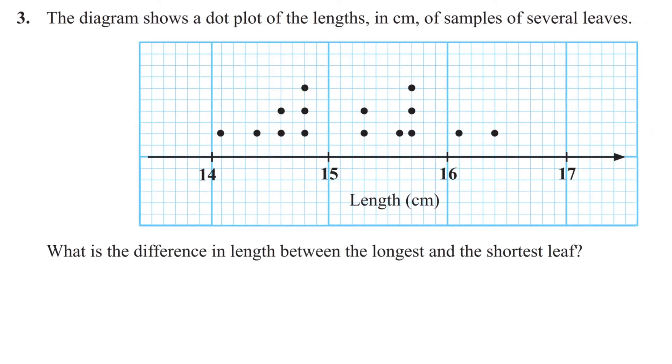Number 3: The diagram below shows a dot plot of the length in centimeters of samples of several leaves. What is the difference in length between the longest and the shortest leaves? The longest leaf is 16.4 centimeters. And the shortest leaf is 14.1 centimeters. So, the difference is 16.4 minus 14.1 equal to 2.3 centimeters.